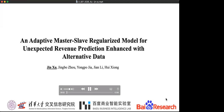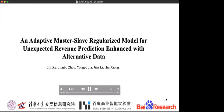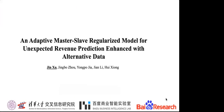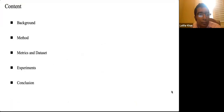I will introduce my paper: An Adaptive Master-Slave Regularized Model for Unexpected Revenue Prediction Enhanced with Alternative Data. My name is Jin Xu. I will introduce the background first, then the method, metrics, dataset, experiments, and conclusion.